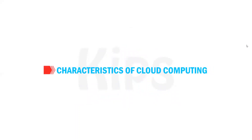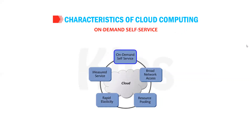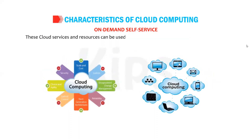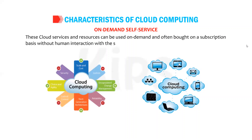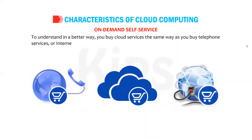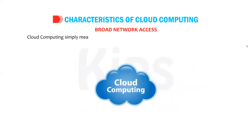Let us first talk about the characteristics of cloud computing. The first characteristic is on-demand self-service. Multiple clients can share resources and applications at the same time. These cloud services and resources can be used on demand and are often bought on a subscription basis without human interaction with the service providers — the same way you buy telephone services or internet access from a utility company and pay for them as per usage.